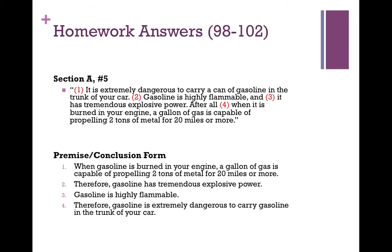We put this into premise-conclusion form. Notice that the very first proposition — it is extremely dangerous to carry a can of gasoline in the trunk of your car — actually becomes our conclusion, listed down here as number four. So we have to rearrange the order to put it in logical sequence. Furthermore, what I have listed as number three — it has extreme explosive power — is actually being supported by the claim that a gallon can propel two tons of metal for 20 miles. So four is being used to support three.